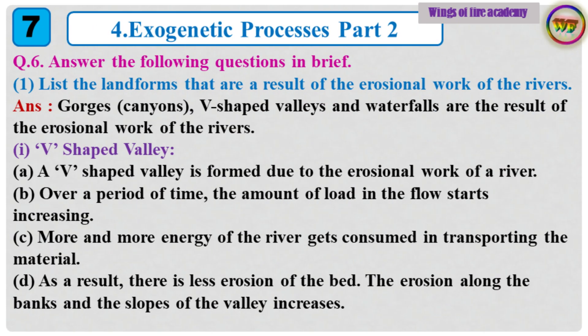Question 6: Answer the following questions in brief. 1. List the landforms that are a result of the erosional work of the rivers. Answer: Gorges, canyons, V-shaped valleys and waterfalls are the result of the erosional work of the rivers. 1. V-shaped valley.